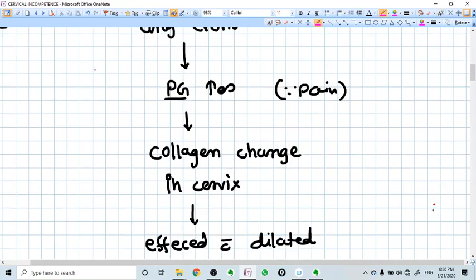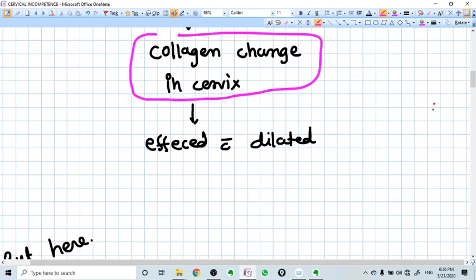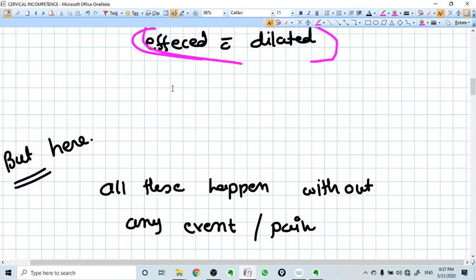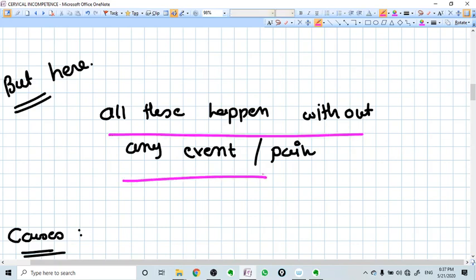We all know that in labor, prostaglandin increases and this prostaglandin increase causes inflammatory changes that lead to collagen change in the cervix. This collagen change leads to effacement and dilatation of the cervix. This happens in normal labor at term pregnancy. But for cervical incompetence, there is no inflammation, no sufficient prostaglandin synthesis, so dilatation and effacement happen without any inflammatory trigger. That's why it is painless.